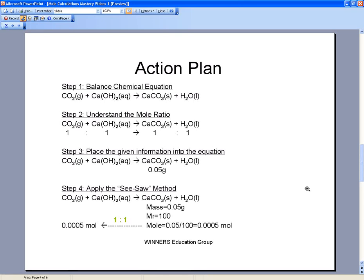Next, we need to plug in the information given in the question: 0.05g mass of calcium carbonate formed. With relative molecular mass, or MR, of calcium carbonate being 100, we apply the formula mole equals mass over MR to give us 0.0005 mole of calcium carbonate precipitate formed.